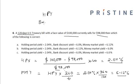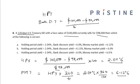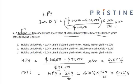The bank discount yield is equal to the face value minus the price, divided by the face value, into 360 days divided by the time to maturity of 120 days, into 100. That equals 6%. So the holding period yield is 2.04%, the bank discount yield is 6%, and the money market yield is 6.12%. The correct option is option A.